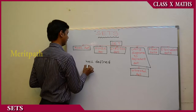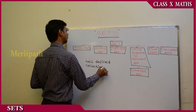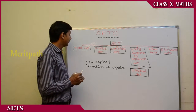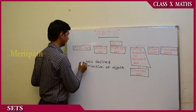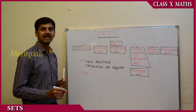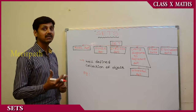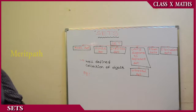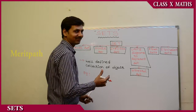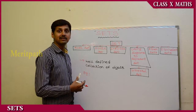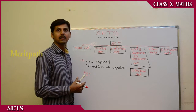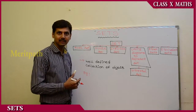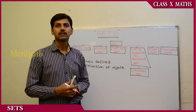A set is a well-defined collection of objects. For example, the students of the tenth class are well-defined — we know all the students and how many there are in the class. We know all the names of the students very well, so this kind of situation is called a set.